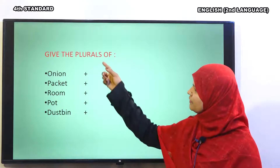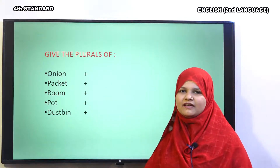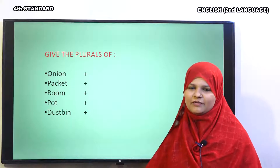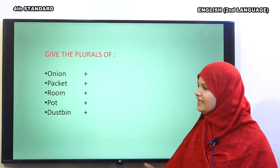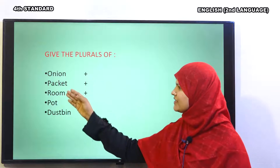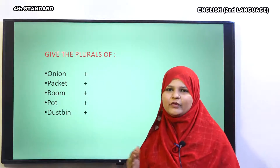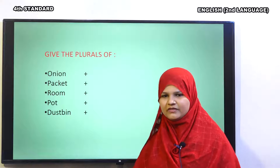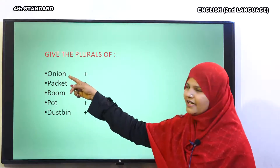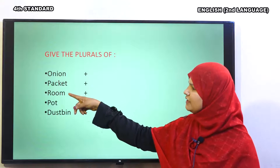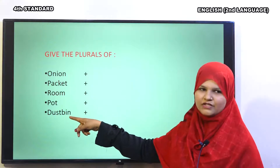Next, let us move to the plurals. Children, do you know the plurals? Very good. Plural yaane jamaa. Jaise ke wahid-jamaa hum Urdu mein padhte hain, in the same manner, in English, we call single words as singular and more than one is called plural. Now, these are the single words like onion, packet, room, pot and dustbin.